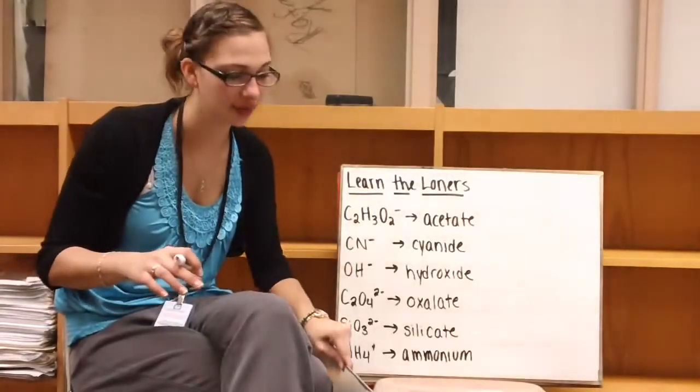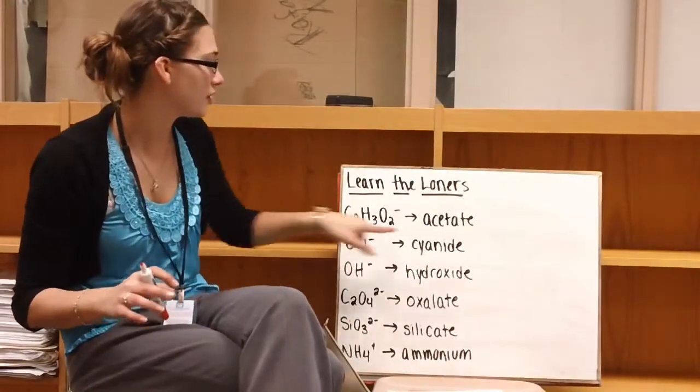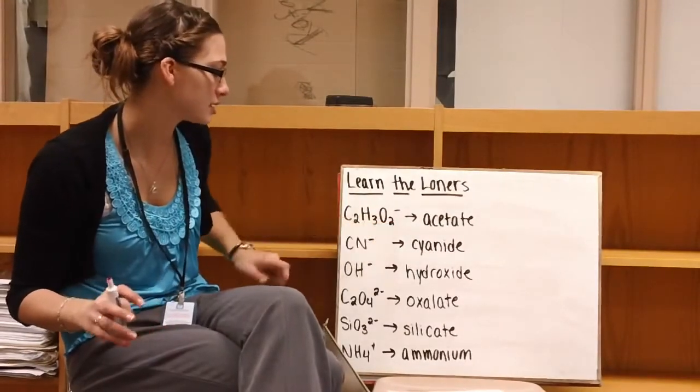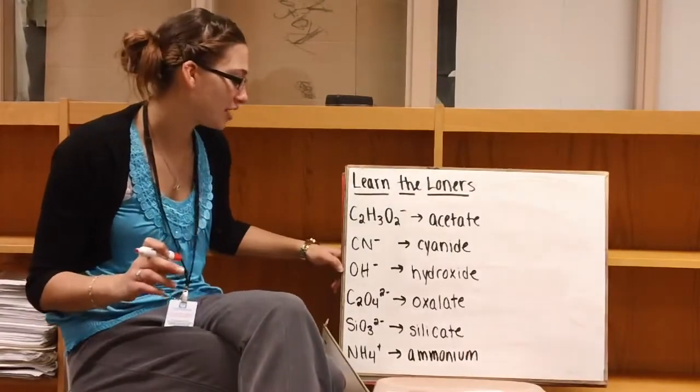And then we have some of our loners. They're not part of families. They're just alone. So our first one is acetate, which is C2H3O2-. Then we have cyanide, which is CN-. We have hydroxide, which is OH-.